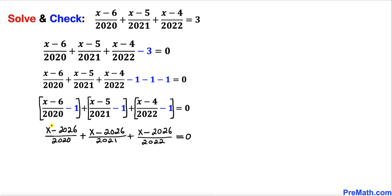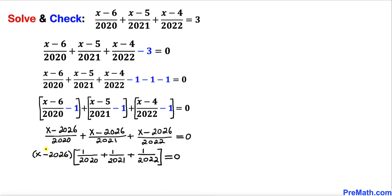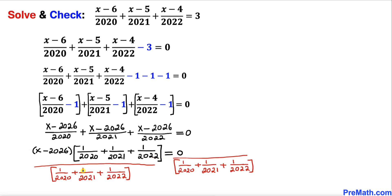We can now see that the numerator (x minus 2026) is identical in all three fractions. In the next step I factor out (x minus 2026), and inside the bracket I write 1 over 2020 plus 1 over 2021 plus 1 over 2022, equals 0. Dividing both sides by that constant bracket quantity, the bracket cancels, and on the right hand side 0 divided by that quantity is simply 0.